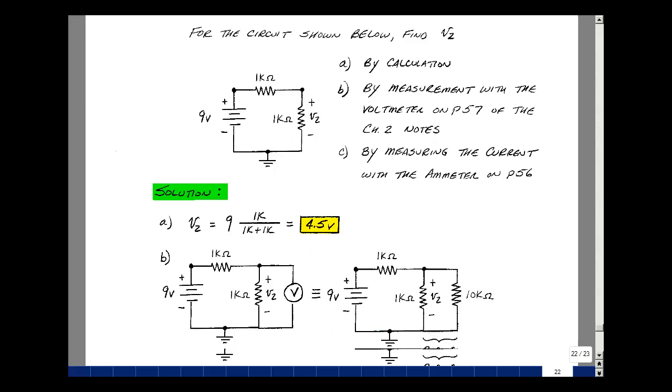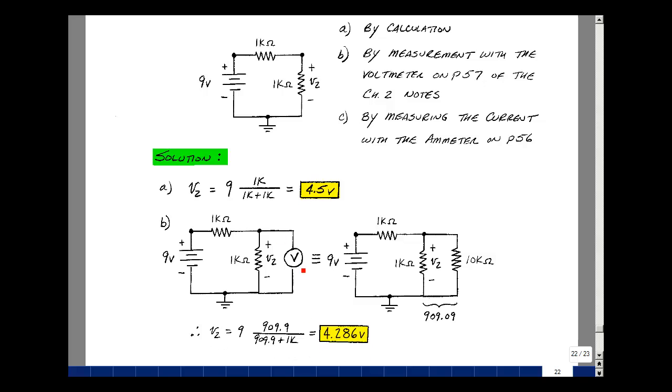Now suppose that we hook a voltmeter across this, and the model we had for the voltmeter in our Chapter 2 notes on page 57 was that it had an equivalent resistance of 10,000 ohms.